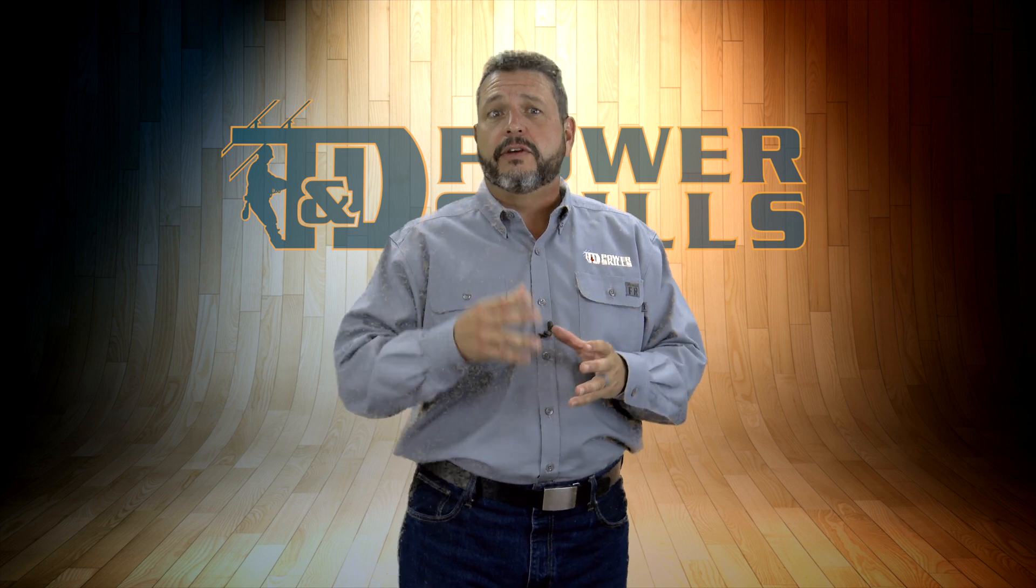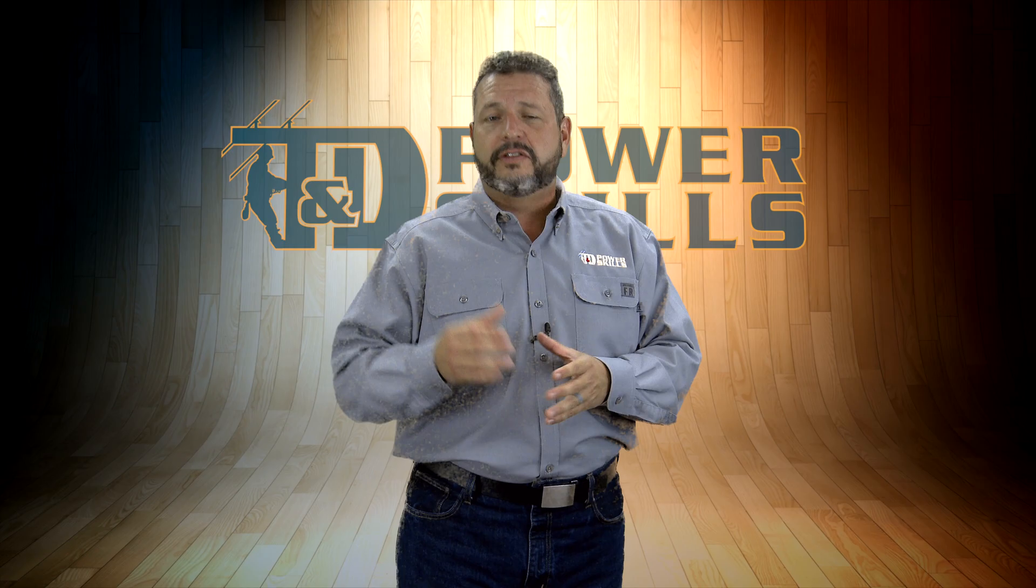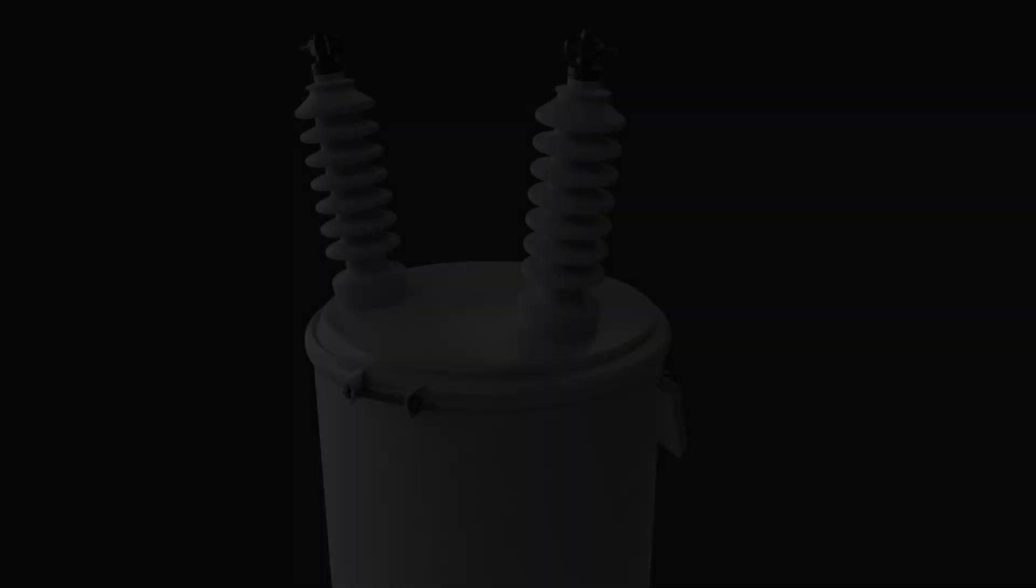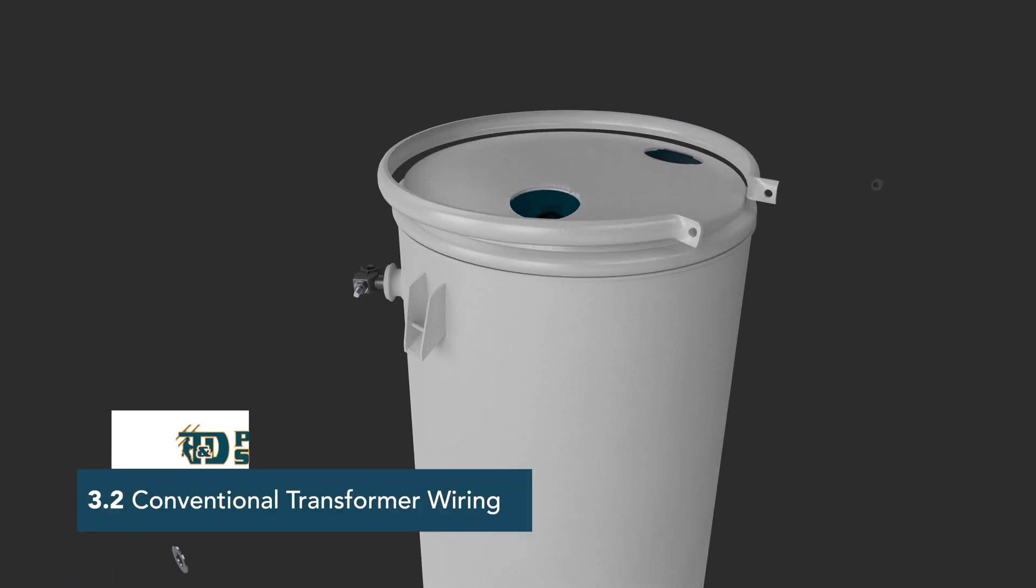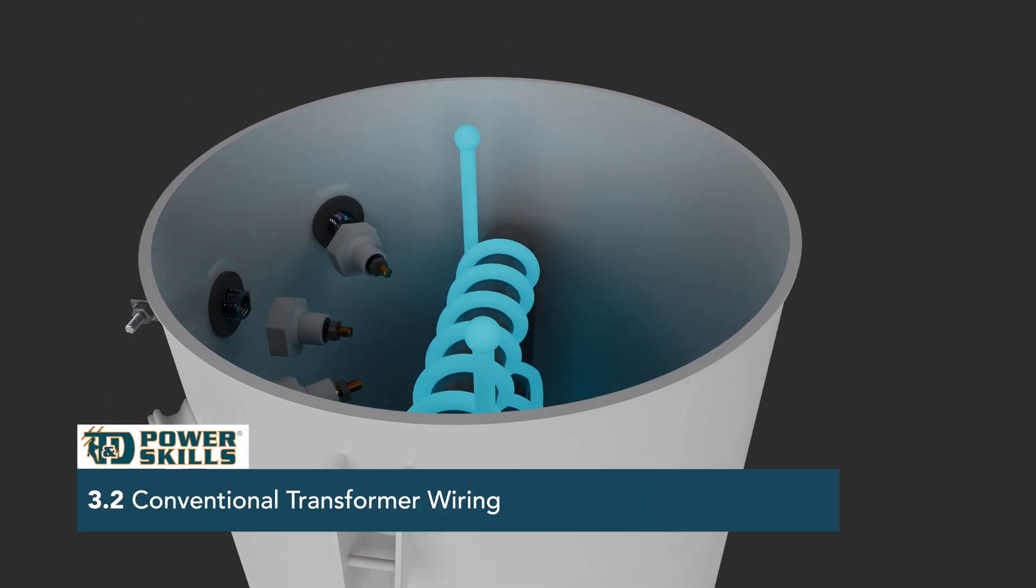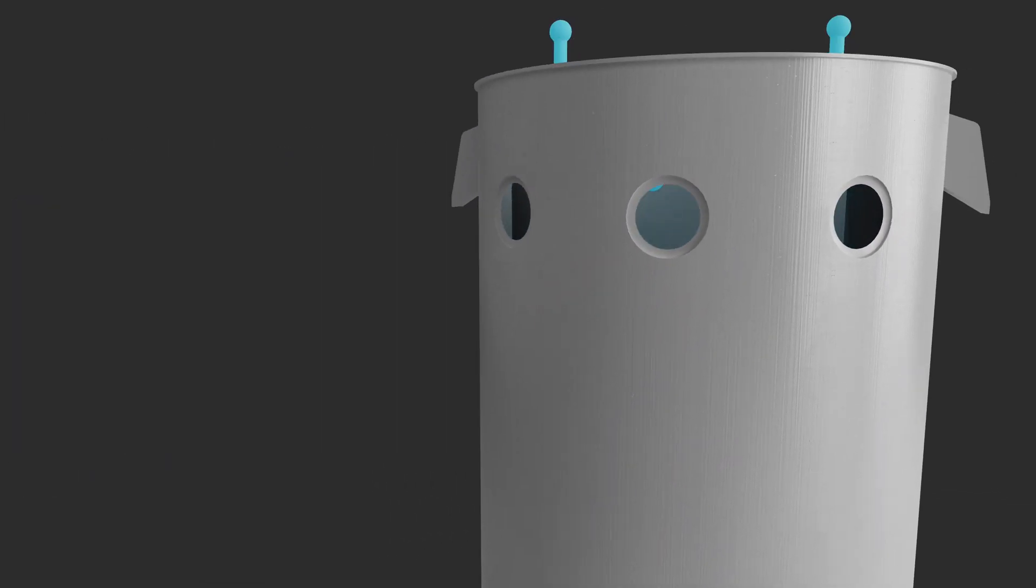The two windings in a secondary of a single phase transformer are typically labeled winding AB and winding CD. We'll use this simplified illustration of the primary and secondary windings in a single phase transformer to demonstrate the internal connections that we refer to as conventional transformer wiring.